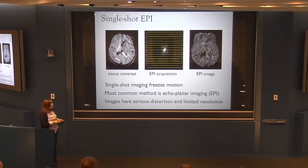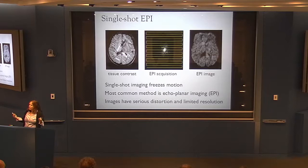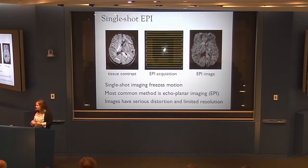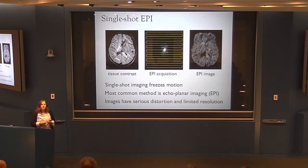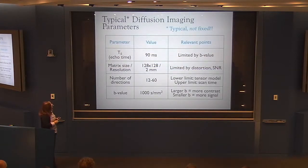EPI has problems though — distortion, limitations on resolution, and other artifacts. If we could use something between EPI and a structural scan — acquiring a few lines per excitation — we would, and considerable effort has gone into making such schemes work. But motion artifacts are incredibly problematic, and although there has been forward movement over the last 10 years, those methods are not yet competitive enough to completely replace EPI.